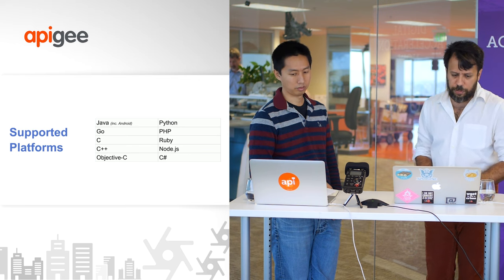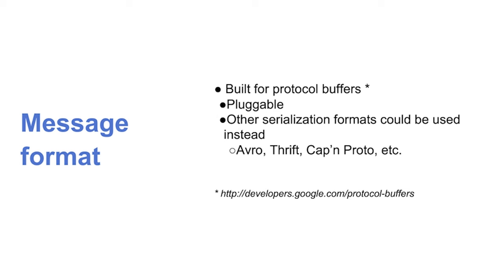Message format is a very important part of gRPC. One thing we didn't like about JSON over HTTP is that JSON is very weakly typed — easy to introduce errors with version changes, requiring very defensive programming. It's also not type-safe. So gRPC uses a strongly typed message format — protocol buffers by default — though that can be replaced with other serialization formats like Avro, Thrift, or Cap'n Proto.